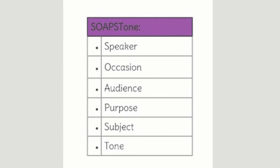Hi, 10th graders. You've been exploring the idea of literary text as social commentary. You've discovered that literary fiction can also be an argument. Today, you are going to analyze the rhetoric of the literary text chapter 14 of Upton Sinclair's The Jungle.